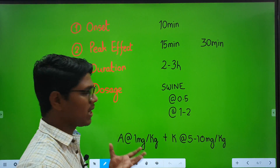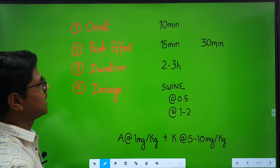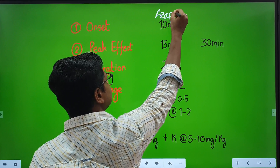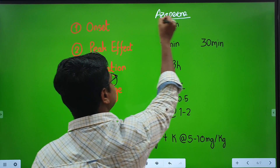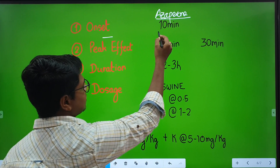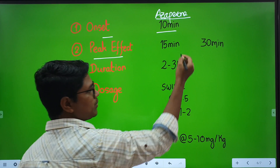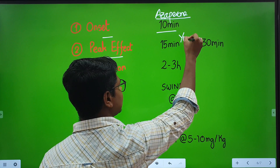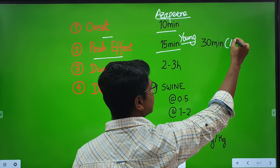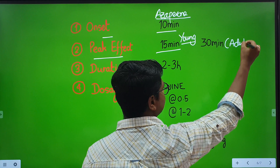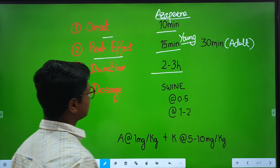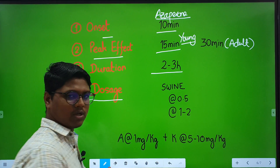Next, we will go to the pharmacokinetics, which is basically for azaperone, as this is the common drug used as a pre-anesthetic. Nowadays, azaperone is also used in some wild animals. The onset of action is within 10 minutes. The peak effect in piglets — onset is rapid, within 15 minutes. In adults, it takes 30 minutes. The duration is similar to phenothiazines, which is 2 to 3 hours. The dosage is commonly used in swines.